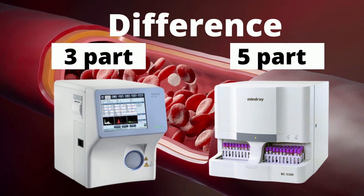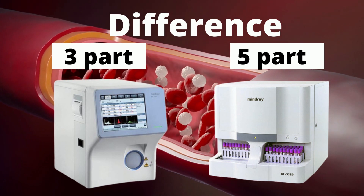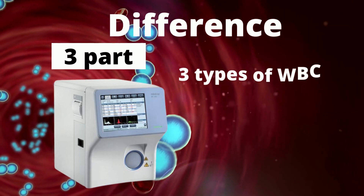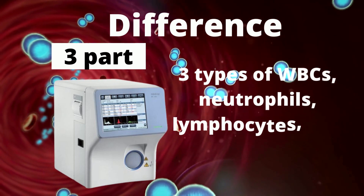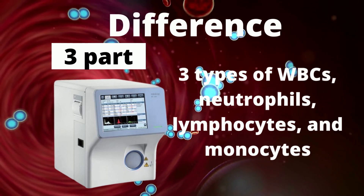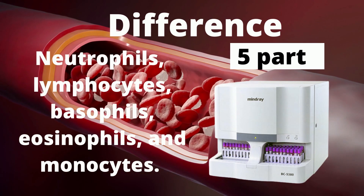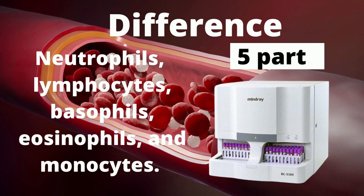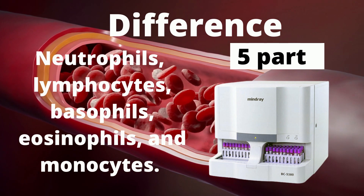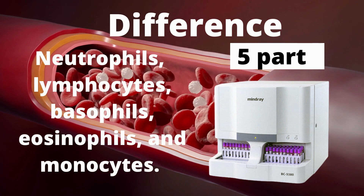The difference between a three-part differential cell counter and a five-part cell counter is that a three-part cell counter reports only three types of WBCs — neutrophils, lymphocytes, and monocytes — while a five-part can differentiate all WBC types: neutrophils, lymphocytes, basophils, eosinophils, and monocytes.